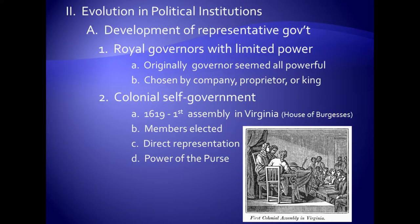There's also evolution in the political institutions in the colonies. What develops — not as a conscious attempt to be different from England, but rather following the pattern of British government with a much different experience — is representative government. While the company or the king sent governors from England with a great deal of power, as it actually evolved in America, the governors had very limited power. Most power resided in the colonial assembly, the first of which was established in Jamestown in 1619, called the House of Burgesses.